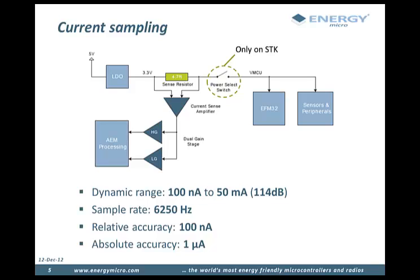In the high current range, the low gain amplifier is used and the accuracy is 0.1 milliamps. When the current drops below 250 microamps, the high gain stage kicks in and the accuracy increases to 1 microamp. Even though the absolute accuracy is 1 microamp, the AEM is able to detect changes in the current consumption as small as 100 nanoamps.